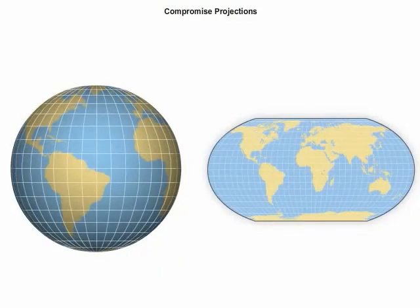Compromise projections are used for general purpose world maps. They are used to communicate a balanced representation of the globe. Spin the globe to visually compare the representation of Earth's spatial characteristics on this compromise projection.